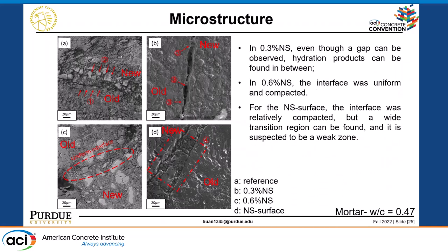For the 0.3% nanosilica SEM image, we can observe a gap in the interface; however, we can also observe hydration products in between. We believe that for samples with nanosilica, the interface quality will get even better at later age because of the potential pozzolanic reaction of the nanosilica particles. For the 0.6% sample, it is much better. For the surface method sample, the interface was relatively compact, but interestingly there is a wide transition region at the interface, much wider than the other samples. We believe this is a weak zone that includes both the pozzolanic reaction products and the precipitation of nanosilica due to the high concentration.